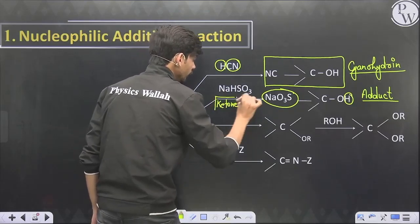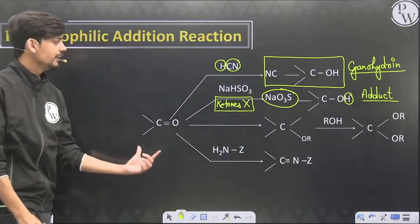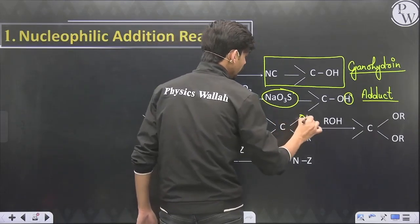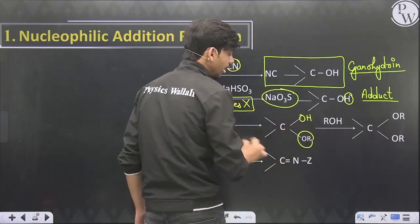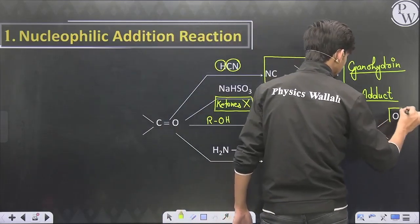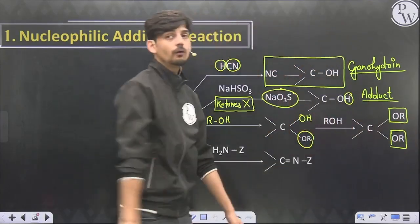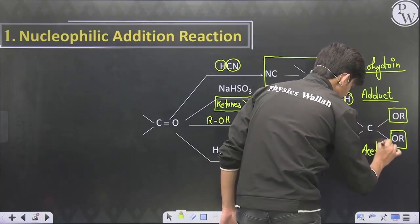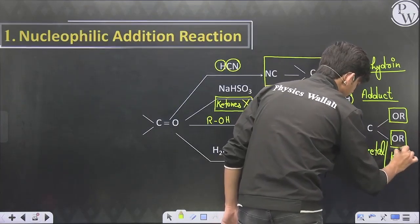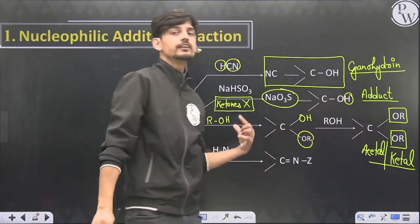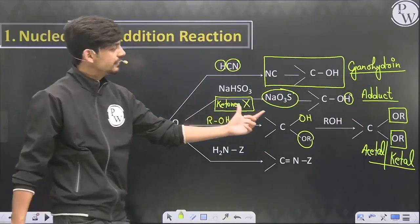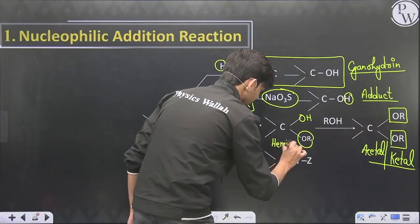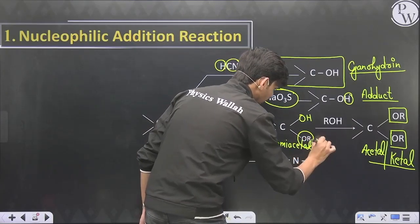We can add alcohols: first we get –H on the oxygen and –OR on the carbon; this is the hemiacetal (for aldehyde) or hemiketal (for ketone) stage. In the next step, one more mole of alcohol replaces the remaining –OH group. The compounds are called acetals (for aldehydes) and ketals (for ketones). The halfway step products are called hemiacetals or hemiketals.